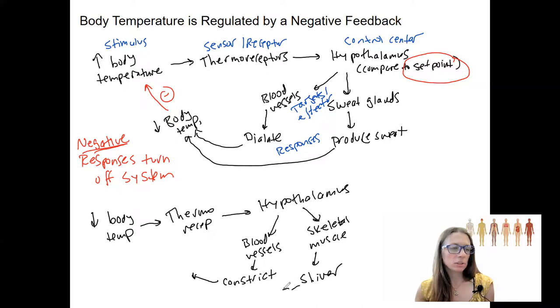So those are going to act to increase body temperature. This is an increase in body temperature. It's still negative feedback because this increase in body temperature turns off the system. Negative feedback means turning off the system, does not mean anything about the direction of the response in terms of increase or decrease the level of the variable.